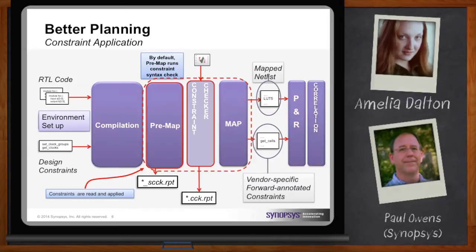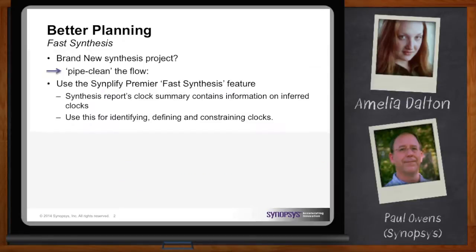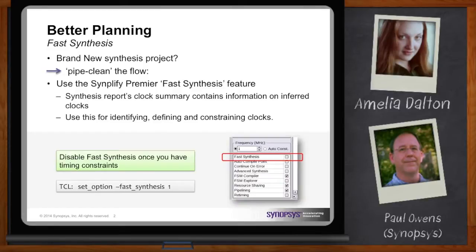How do we create those constraints? There are actually several methods. One is we have an option in our tool called Fast Synthesis. If you have a brand new project and haven't created constraints before, this is a quick and easy way to do it. You set the Fast Synthesis option — it doesn't enable all the various algorithms and enhancements for synthesis. It creates a quick-and-dirty synthesis run that will pipe-clean the flow, showing any issues in your design, and will also create an initial timing report which you can use to base your timing constraints on.